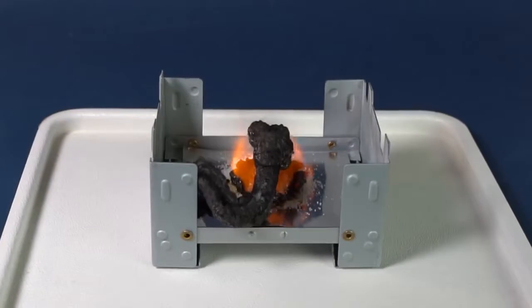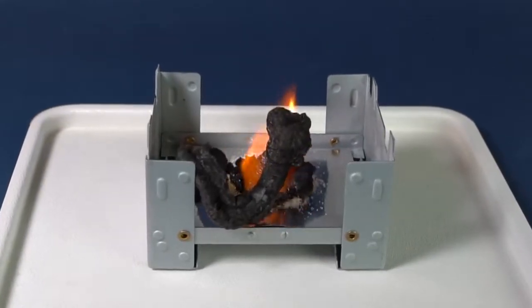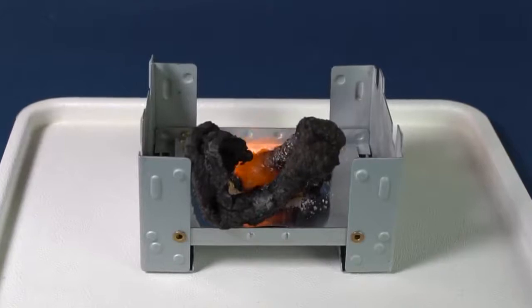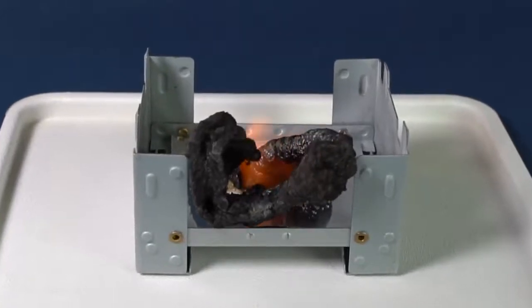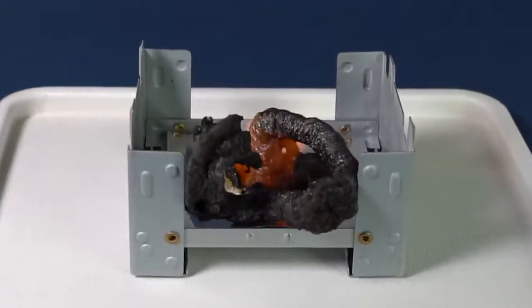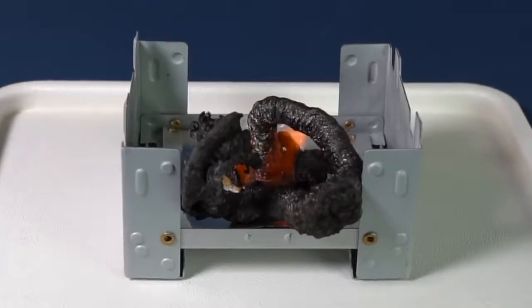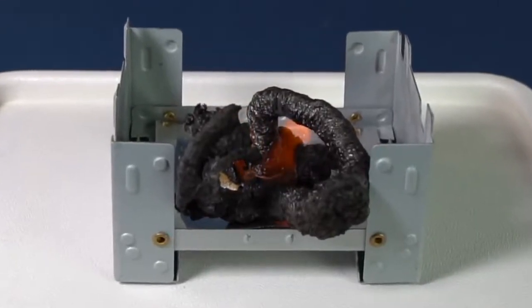At high temperature, sugar decomposes into carbon and water vapor. That is how our snake forms. Soda, in this process, decomposes with the formation of carbon dioxide, which expands the carbon formed out of the sugar. That is how the snake grows.